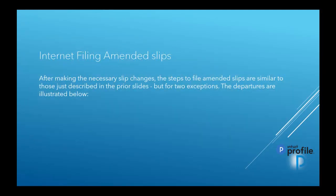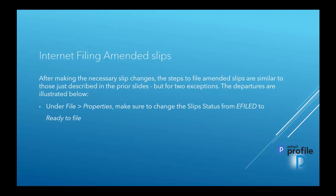If you ever amend a slip and need to file that amended slip, make the necessary changes first on the slip. The steps are similar to those just described, but with two exceptions. Under File Properties, make sure to change the slip status from e-file to Ready to File, and change the data type from Original to Amended.